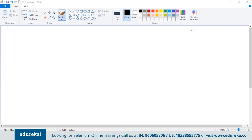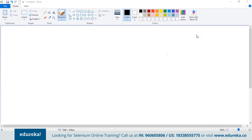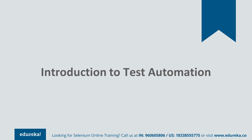First, let's understand what applications are. An application is a set of lines of code written to achieve coordinated functions or tasks. There are basically four different types of applications: desktop applications, web applications, mobile applications, and hybrid applications.